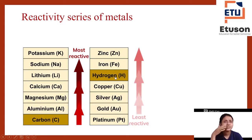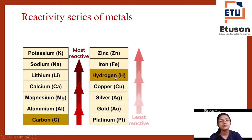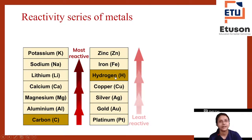From the reactivity series, potassium is the most reactive metal, followed by sodium. That is why potassium and sodium are stored in kerosene — in order to prevent reaction with atmospheric oxygen, as they are very reactive.